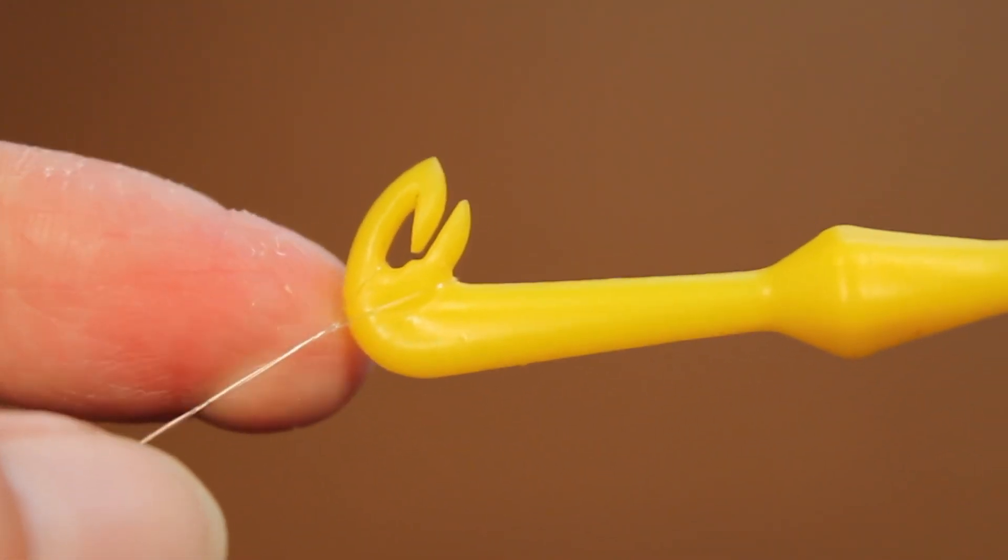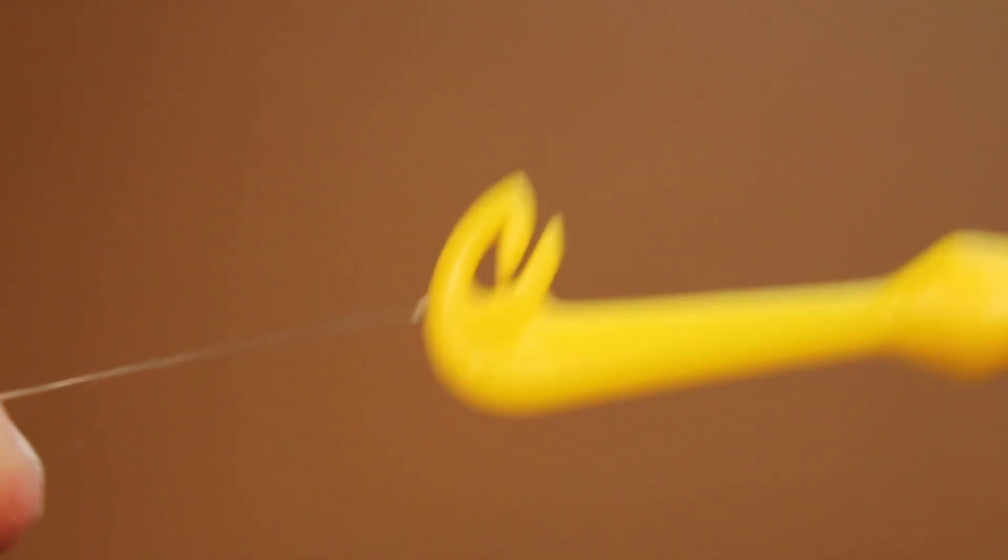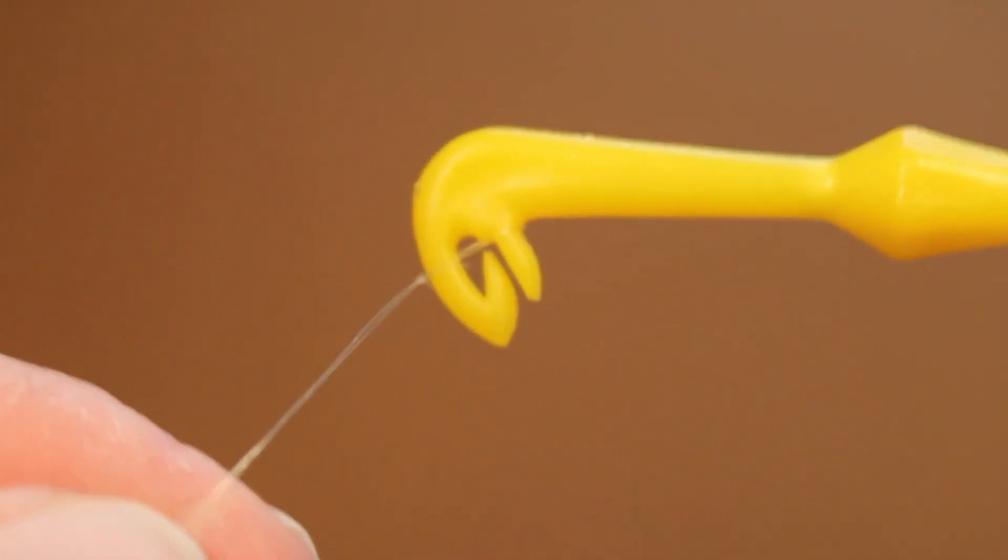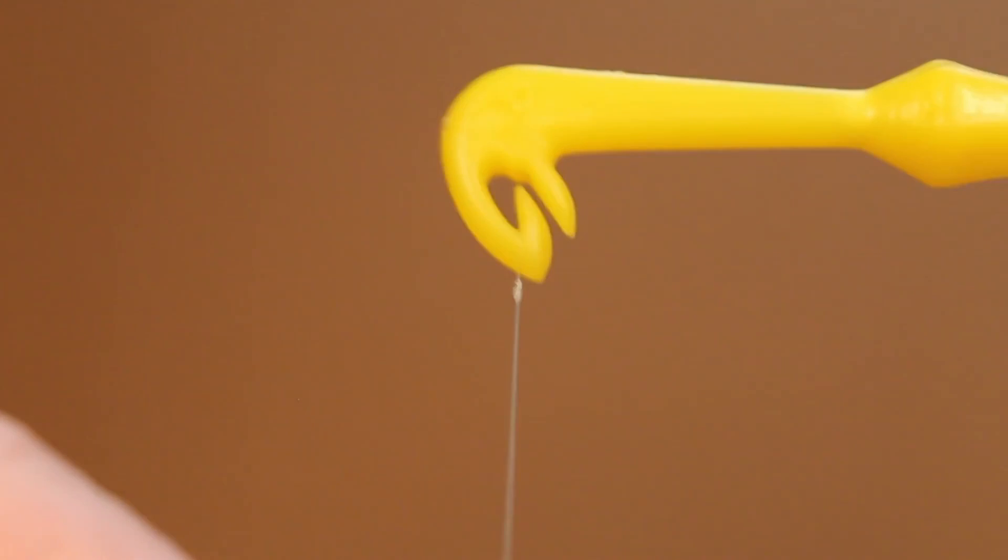Moisten the line with saliva. Pull the line down to the hook part of the tool and tighten the knot. Remove the line from the tool and cut off the tail end.